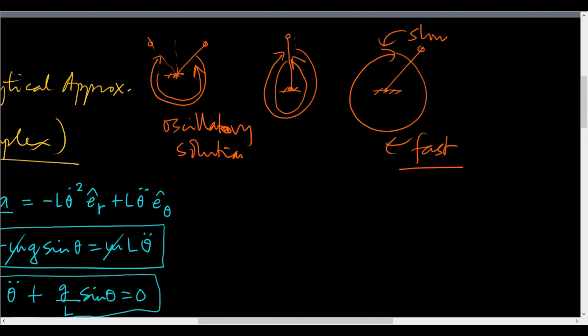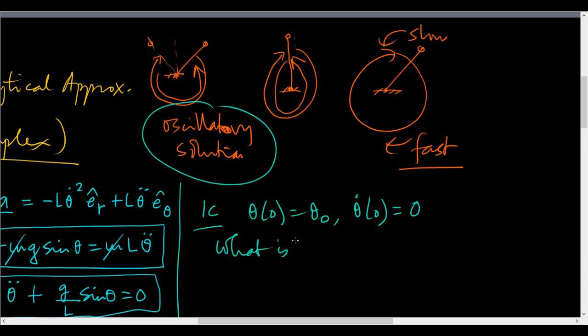We are interested in these oscillatory solutions. In particular, we are interested in the initial condition: theta at 0 equals theta_0, theta dot at 0 equals 0. What is the time period?